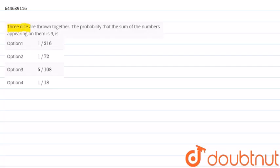three dice are thrown together. The probability that the sum of the numbers appearing on them is nine. So we have been given that